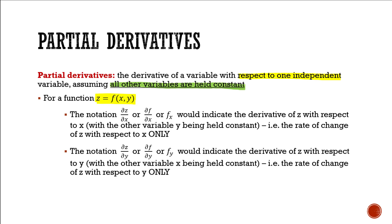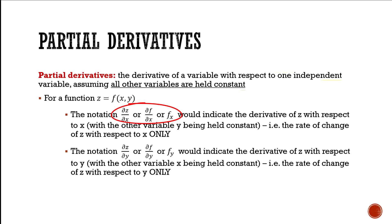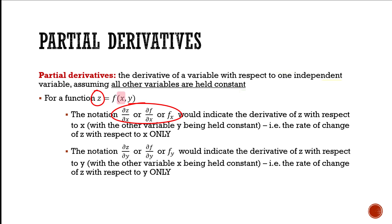So we're looking at how it might change with respect to x if y is constant, or vice versa. The notation di z by di x, or di f by di x, or f sub x — all of these mean the exact same thing, and these notations are interchangeable. What they indicate is the derivative of our z function with respect to x and x alone, assuming that the other variable y is being held constant. In other words, this is the rate of change of z with respect to x only, assuming that y is constant.